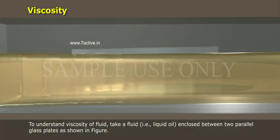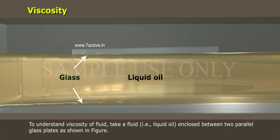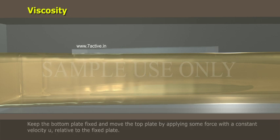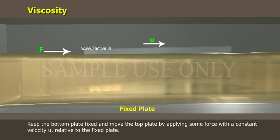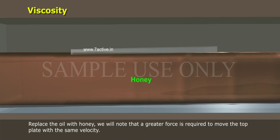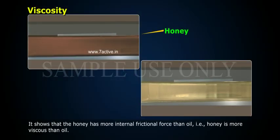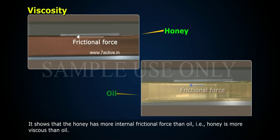To understand viscosity, take a fluid — liquid oil — enclosed between two parallel glass plates as shown in the figure. Keep the bottom plate fixed and move the top plate by applying some force with a constant velocity U relative to the fixed plate. Replace the oil with honey. We note that a greater force is required to move the top plate with the same velocity, showing that honey has more internal frictional force than oil. That is, honey is more viscous than oil.